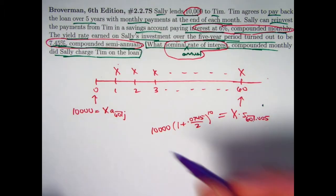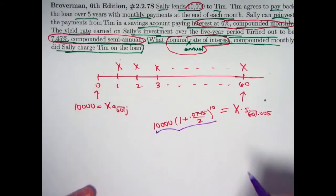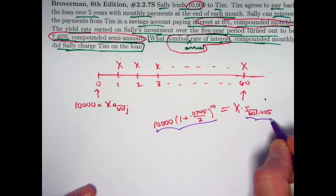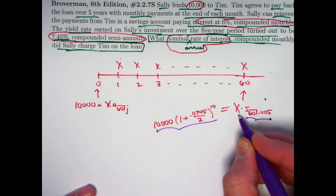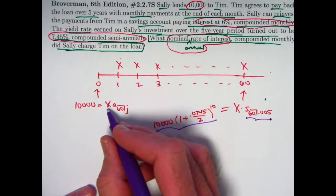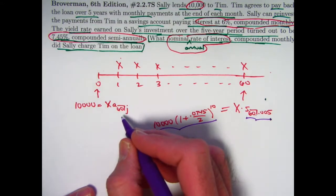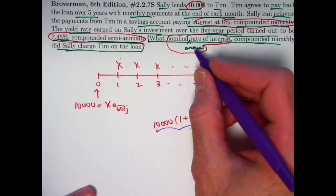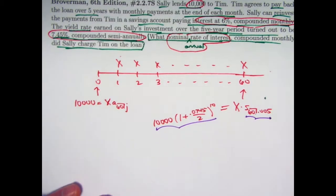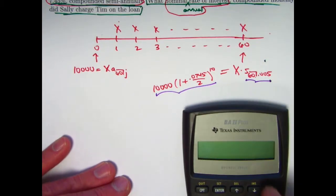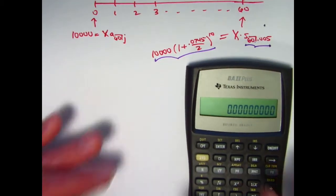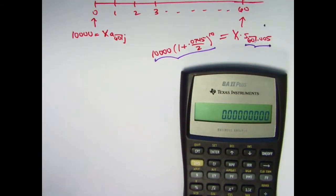Let's figure out what the right-hand side equals, and also evaluate s-angle-60, which will allow us to solve for X. Then we can plug X back into the present value equation to solve for j, and once we have j we multiply by 12 to get the final answer. I'll use the calculator now for ordinary calculator usage — not the financial functions yet. Those come when we solve for j.